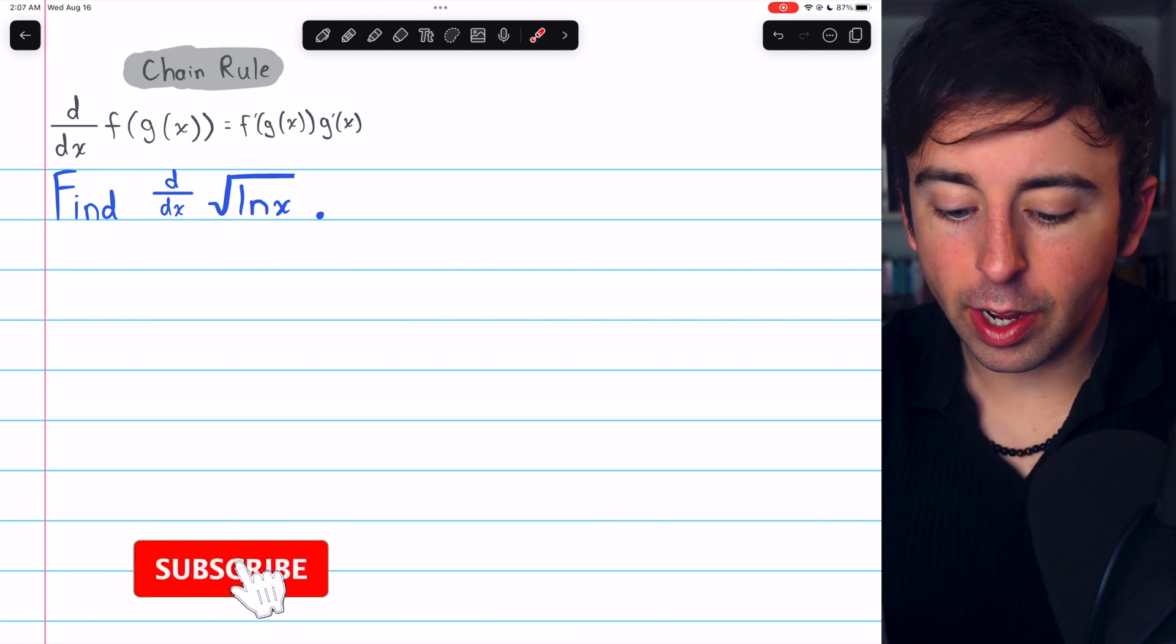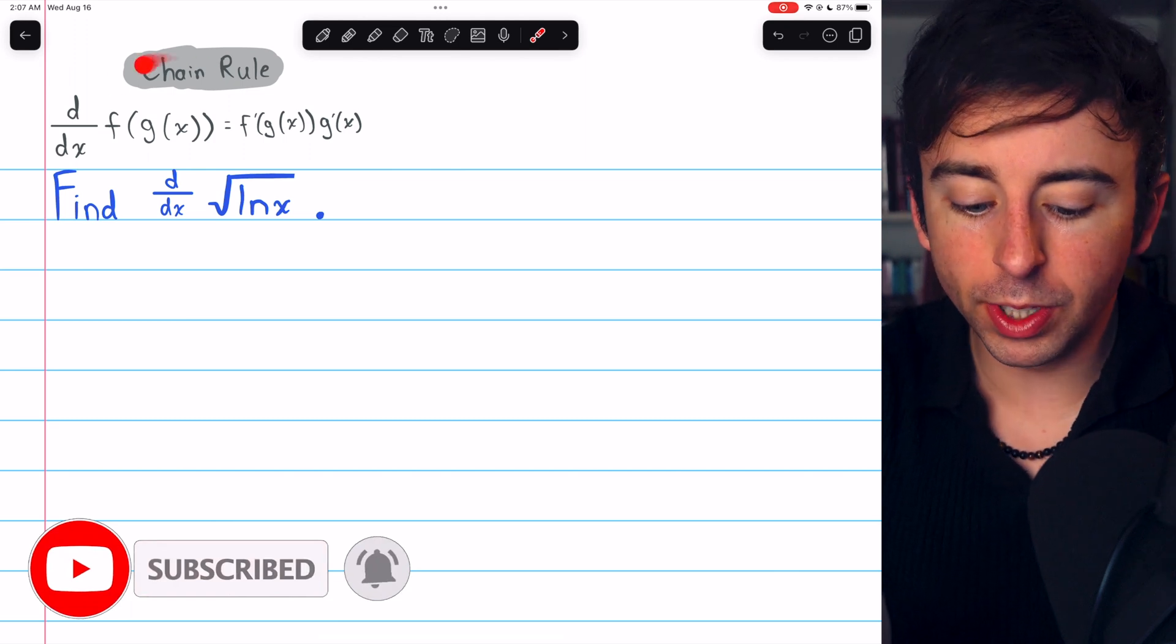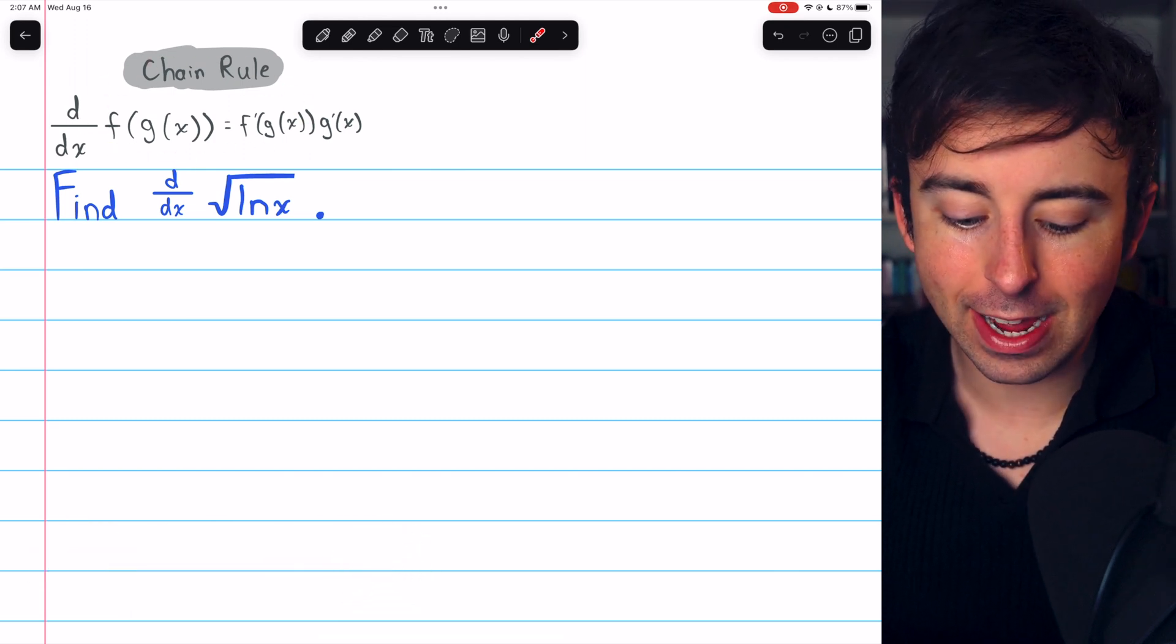The square root of the natural log of x is a composite function. So to find its derivative, we'll need to use the chain rule, which I've written here.